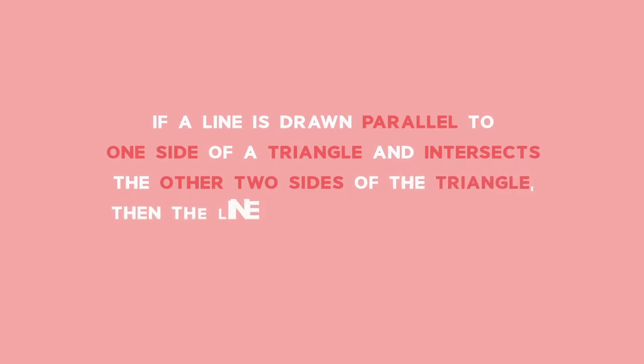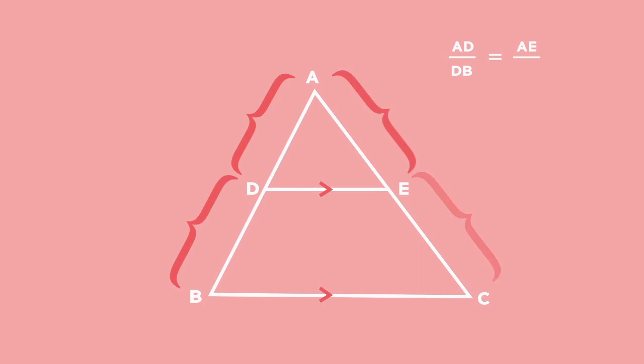The proportion theorem describes how we can use knowledge about ratios in triangles, where one triangle is contained in another. The theorem states that if a line is drawn parallel to one side of a triangle and intersects the other two sides of the triangle, then the line divides these two sides proportionally. We can translate this theorem in a given triangle ABC as if DE is parallel to BC with D on AB and E on AC, then DE divides sides AB and AC in proportion. In other words, the ratio of AD to DB is equal to the ratio of AE to EC. Two other ratios can also be deduced. The ratio of AD to AB is equal to the ratio of AE to AC.